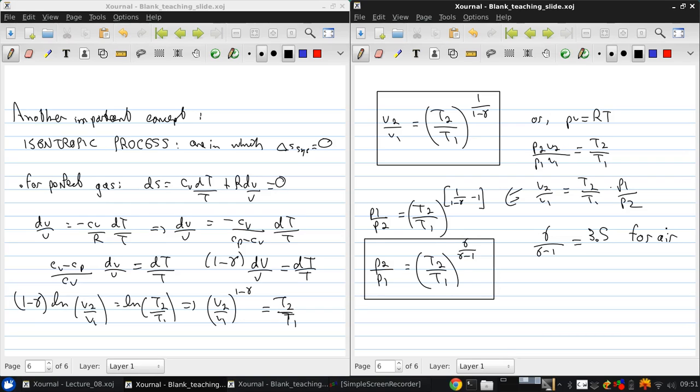So, why is this important? Well, what does this tell us? This tells us that pressure goes up much faster than temperature for an isentropic process.